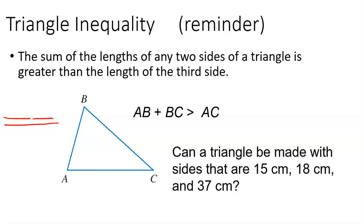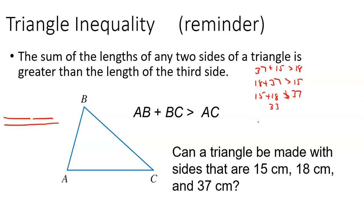So the question is, if I have sides of 15, 18, and 37, can they make a triangle? Well, 37 plus 15 is greater than 18 — it passes that one. 18 plus 37 is bigger than 15. But is 15 plus 18 greater than 37? It is not. 15 plus 18 is 33, and that's not bigger than 37.